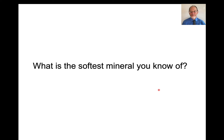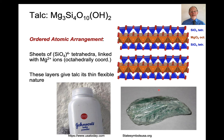Quick question: what is the softest mineral you know of? The softest one I can think of is talc. Talc has an ordered atomic arrangement. Here's an example from a Vesta image — silica tetrahedral sheets, a whole sheet of silica tetrahedra all connected at the corners. This is an octahedral sheet of magnesium octahedra, also connected at the corners and to the silica tetrahedra. And here is another sheet of silica tetrahedra — a tetrahedral-octahedral-tetrahedral sheet. This underlying structure is what gives talc its thin and flexible characteristic.